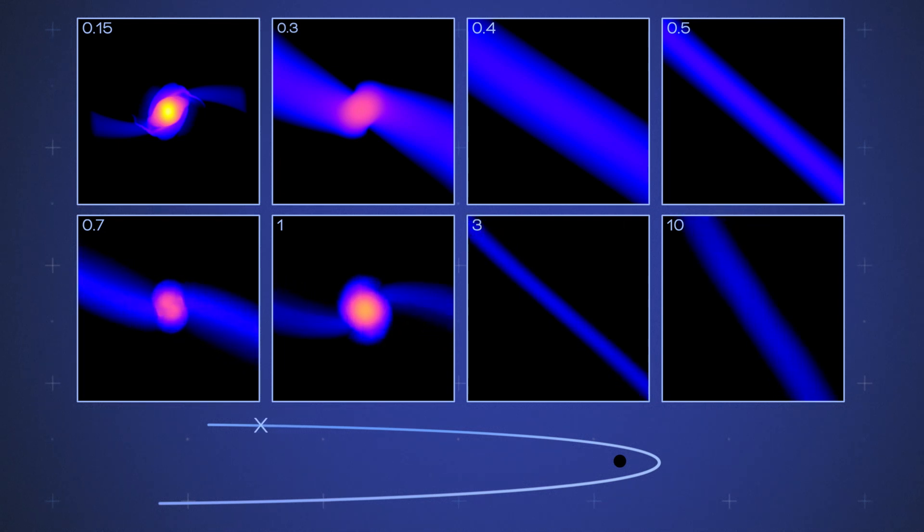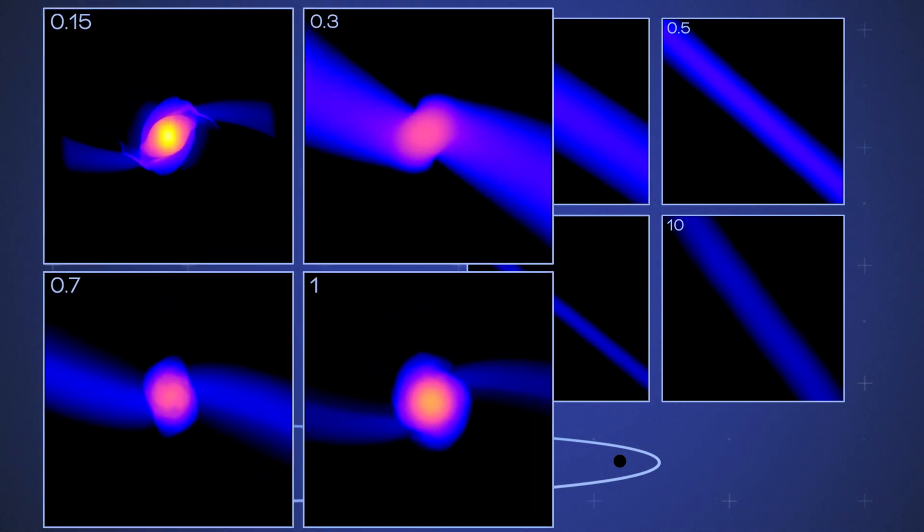Surprisingly, the stars that fully and partially disrupt aren't cleanly divided by mass. The sun-like star, along with those with 0.15, 0.3, and 0.7 solar masses, survive their close encounters.